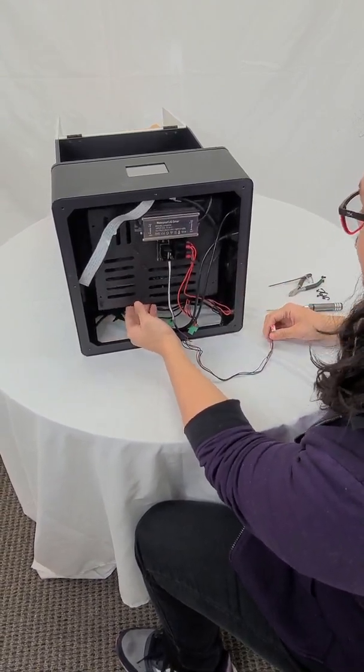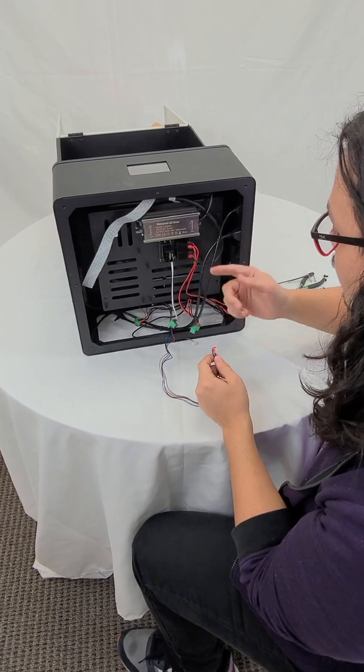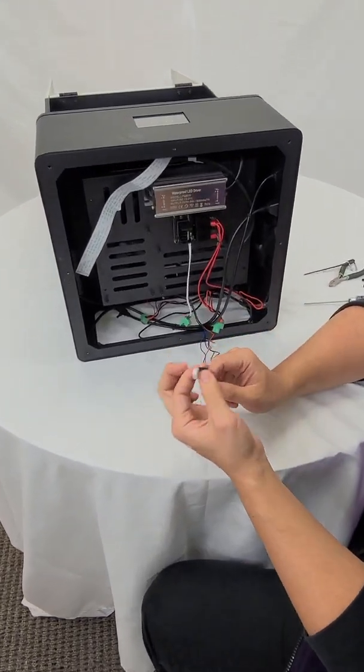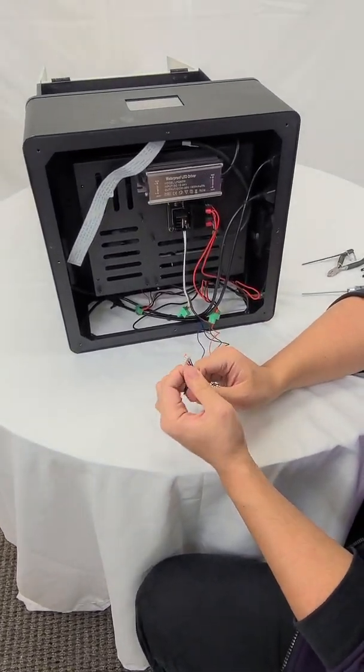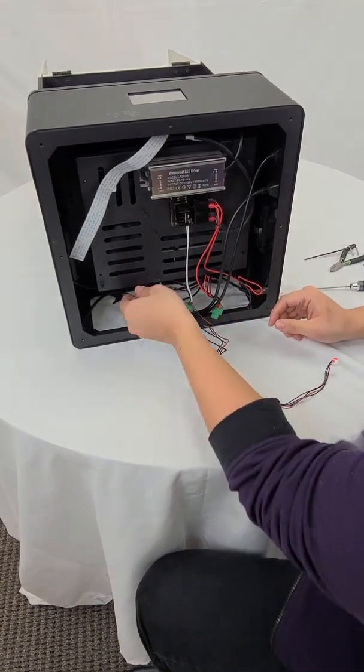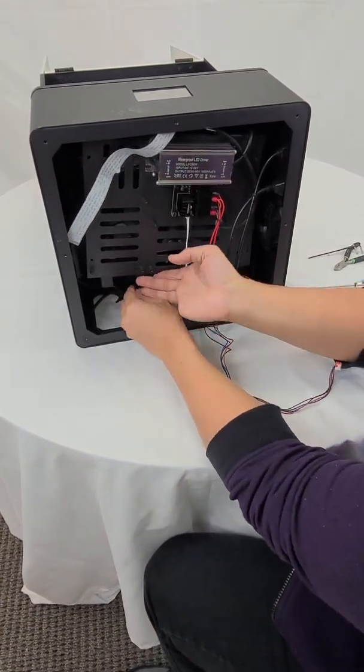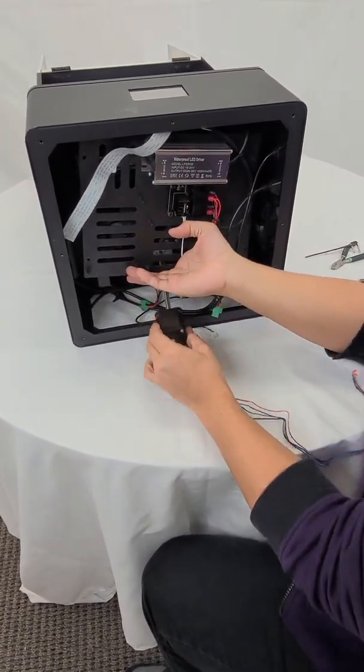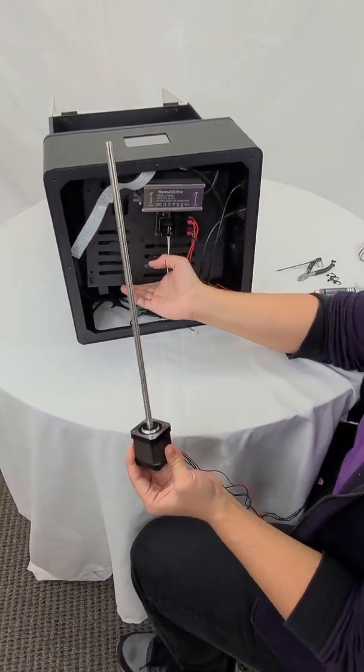Next, you're going to want to cut off all the zip ties so you can free this four-pin connector from the main board. That way you can easily pull it out without having to deal with any wires.